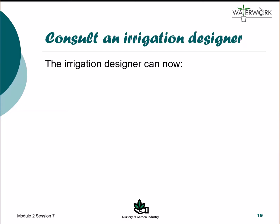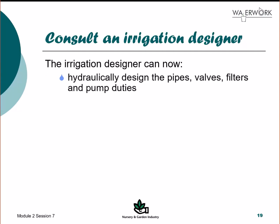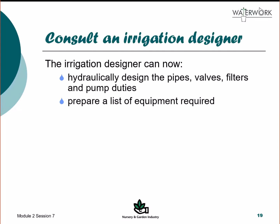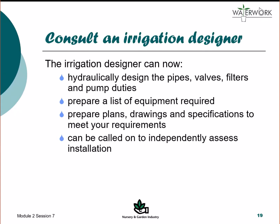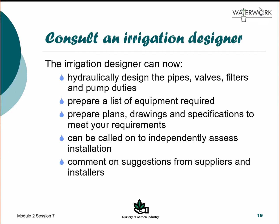Having gathered the required background information and made decisions on the preferred type of irrigation system, the irrigation designer can now be engaged to determine the design pipe sizes, control valves, filters and the pumping duties required. The designer can then prepare a list of equipment required to build the system and prepare plans and drawings to show positioning and arrangement of equipment. The designer can also be called on to assess the installation, verify its adequacy, and comment on alternative arrangements or equipment suggested by equipment suppliers and installers.